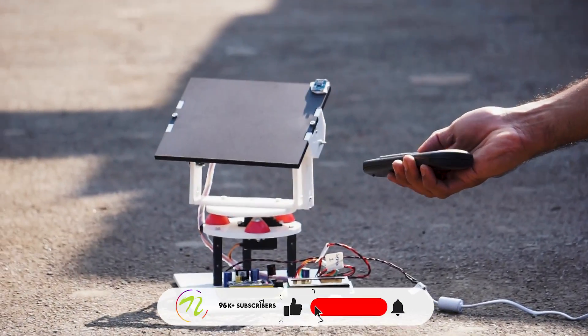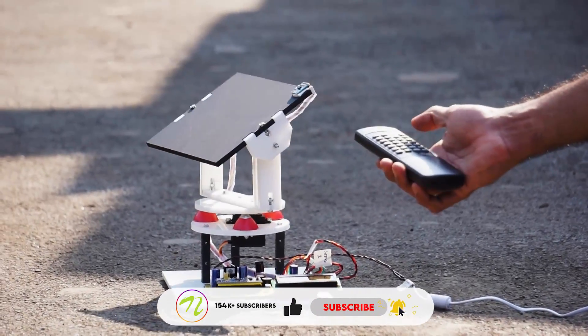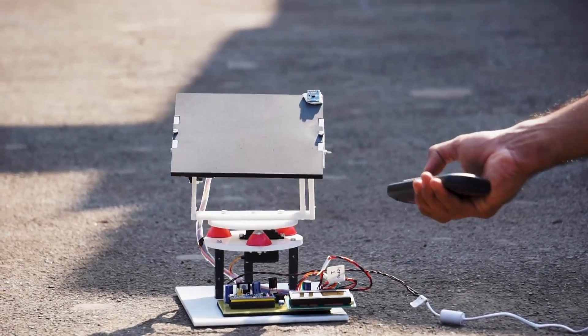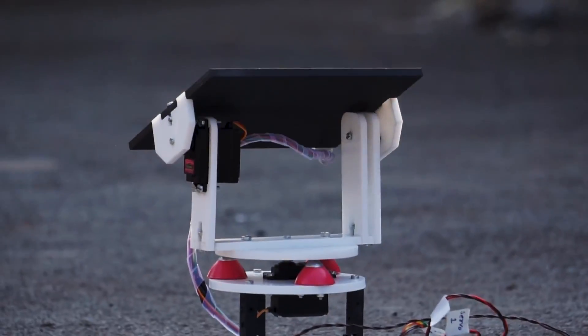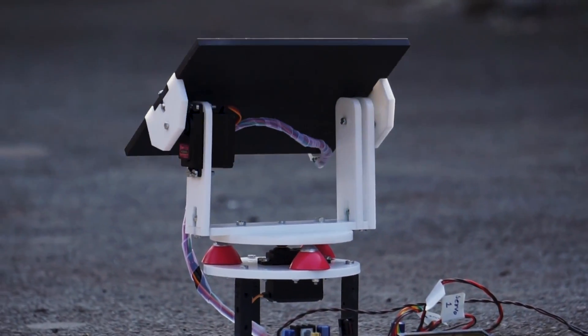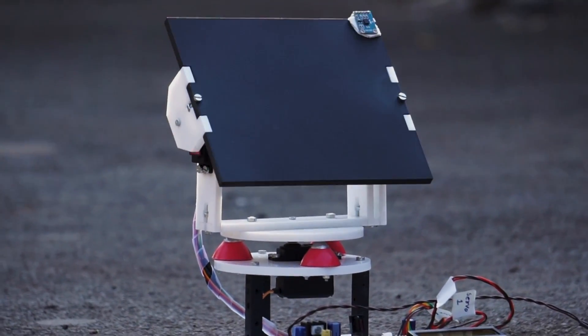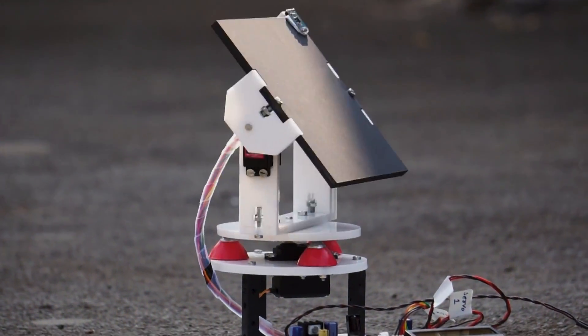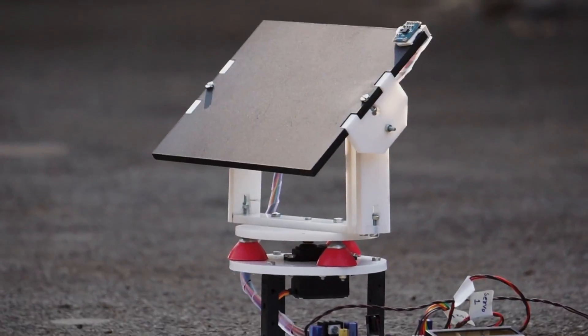Secondly, the system uses a second servo motor to change the horizontal direction of the antenna. When used in combination, both servo motors allow for a 360-degree position adjustment of the antenna as per the IR remote.